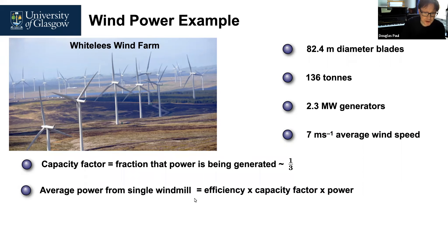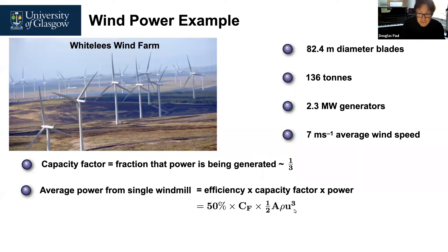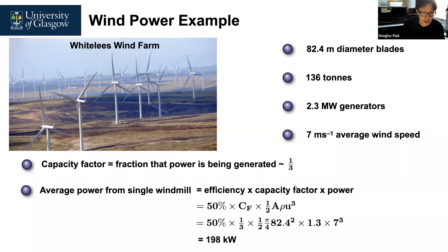The average power from a single windmill is efficiency times capacity factor times the power generated. The Betz limit is 59%, so let's go a little below that, assuming these are quite efficient. The capacity factor is one third, and we use half times the area — using the 82.4 meter diameter — times density of 1.3 kg/m³ times velocity cubed at 7 m/s average wind speed. Putting these numbers in, we get 198 kilowatts.